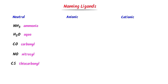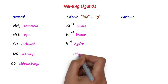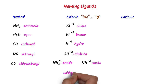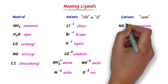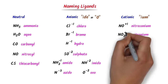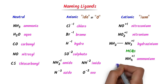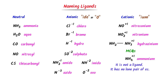In case of anionic ligands, the '-ide' is replaced by '-o'. Like chloride is written as chloro, bromo for Br, sulfido for S, amido for NH2, imido for NH, nitrido for N, and oxo for O, etc. In case of cationic ligands, we usually add '-ium' at the end, like nitrosonium NO, nitronium NO2, hydrazinium, etc. Remember that ammonium ion NH4 is not a ligand because it has no lone pair.